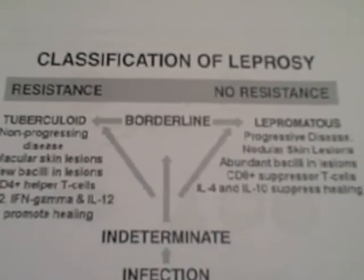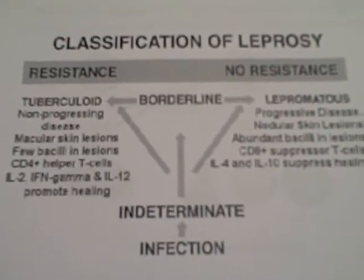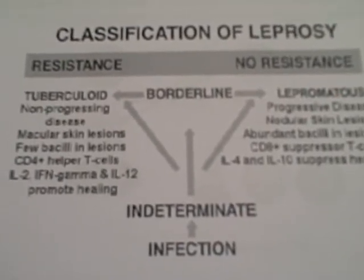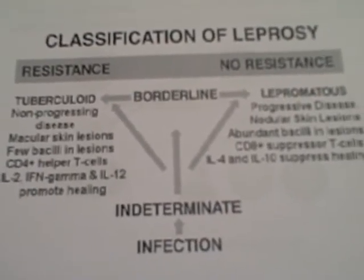Classification of leprosy: resistant versus non-resistant. The resistant type is tuberculate — a non-progressing disease characterized by macular skin lesions with few bacilli in the lesions. CD4-plus helper T-cells, interleukin-2, interferon-gamma, and interleukin-12 promote healing.